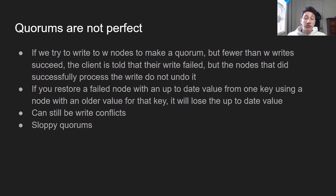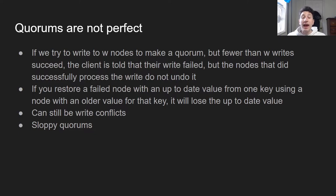Second limitation: if you restore a failed node with a key-value pair from an older node, that node is no longer going to have an up-to-date key and value. The quorum parameter w that you might have satisfied earlier on a write — once the node crashes and comes back up — is no longer satisfied. Now only w-1 nodes have the correct value. Third: you can still have write conflicts — I'll demonstrate a race condition right after this that can happen even using quorums. And fourth is something called sloppy quorums, which I'll discuss in a bit.